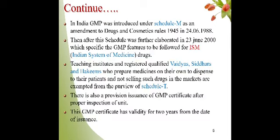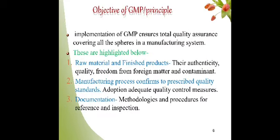In GMP, if any Vaidya, Siddha, or Hakim is preparing their own dosage form and giving it to their own patients, they are excluded from Schedule T. But when any person is going to manufacture on a large scale, they have to follow Schedule T. There is a provision for assurance of a GMP certificate after proper inspection of the unit, and this GMP certificate has a validity of two years, after which it must be renewed.